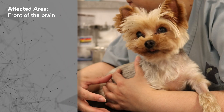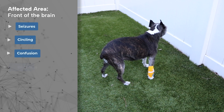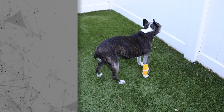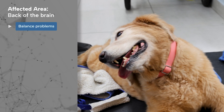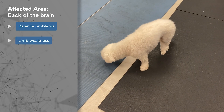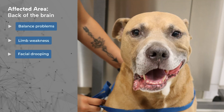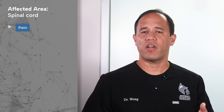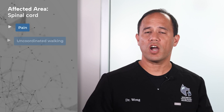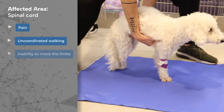Symptoms of meningitis, encephalitis, and myelitis can vary based on what part of the nervous system is affected. When the front of the brain is affected, pets may experience seizures, walking in circles, confusion, or acting blind. When the back part of the brain is affected, pets may be off balance, have a head tilt or abnormal eye movements, weakness in their limbs, droopiness on one side of the face, or be confused or very sleepy. If the spinal cord is affected, symptoms may range from pain to in-coordination, and sometimes dogs even lose the ability to walk or move the limbs at all. If multiple areas are affected, you might see a combination of these symptoms.